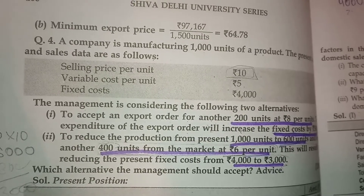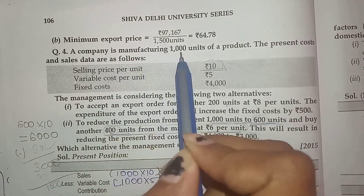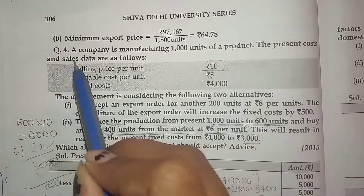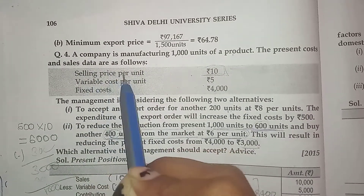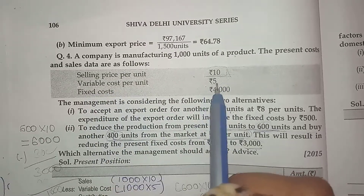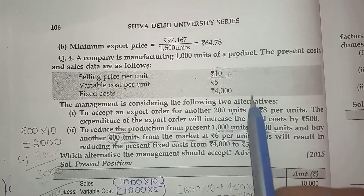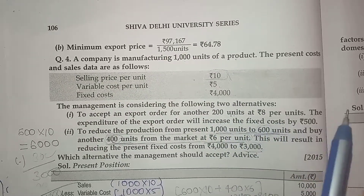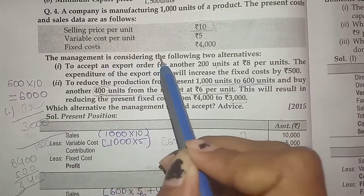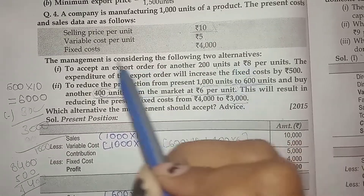Question number four: A company is manufacturing 1000 units of a product. The present cost and sales data is as follows — selling price per unit: ₹10, variable cost per unit: ₹5, fixed cost: ₹4000, units manufactured: 1000. The management is considering the following two alternatives.